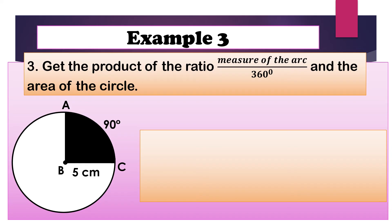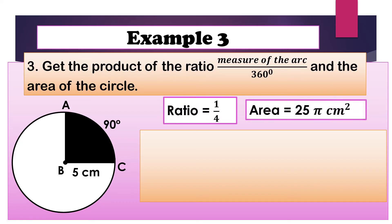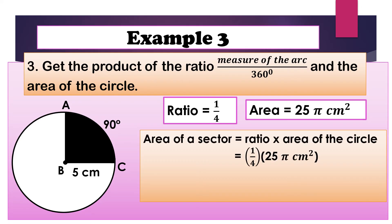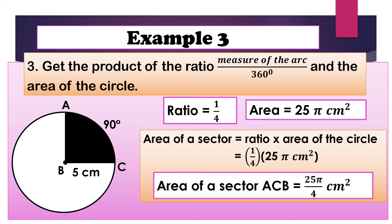For step 3, get the product of the ratio and the area of the circle. The ratio is 1 fourth and the area of the circle is 25 pi square cm. We multiply 1 fourth by 25 pi square cm. The greatest common factor of 25 and 4 is 1, so this will be the final answer: 25 pi over 4 square cm.